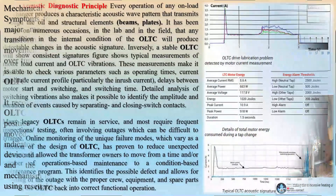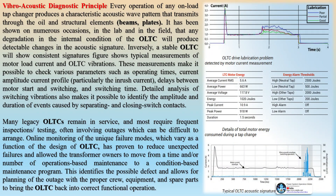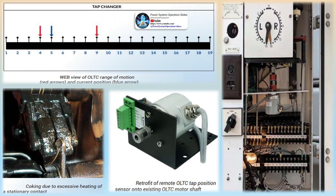OLTC transformers play a vital role in electrical power systems, offering both advantages and disadvantages. Advantages include voltage regulation: OLTC transformers enable precise voltage regulation by adjusting tap settings according to load variations, ensuring stable voltage levels crucial for the efficient operation of electrical equipment. They also offer load flexibility, adapting to fluctuating loads without interrupting power supply by changing tap positions while the transformer is energized, thereby catering to varying demand and enhancing system reliability.